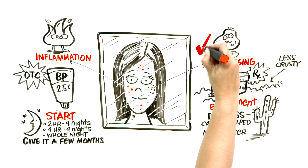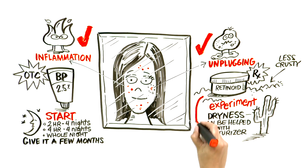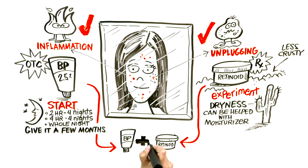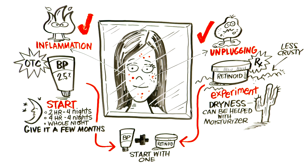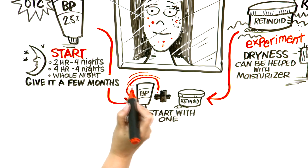So if you look in the mirror and see both red spots and black or whiteheads on your skin, then you need to both unplug and reduce inflammation by using a combination of both retinoid and BP. But I suggest you start with one to see how your skin reacts. There's some debate about which one should be first, but usually most people start with BP as it's over the counter.